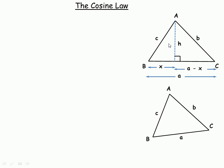Now we're going to use Pythagoras' theorem in the triangle on the left. The sides are c — that's the hypotenuse — and h and x are the two legs or shorter sides. So Pythagoras' theorem says that h squared plus x squared equals c squared.